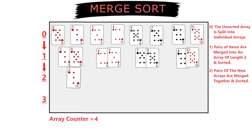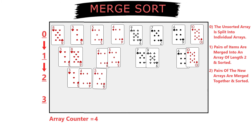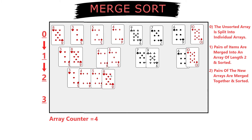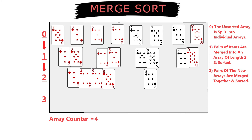In the second iteration, we do the same process by merging the array of length 2 into a new array of length 4. In this example, the 3 will be first, then the 4, the 5 and 8 last. We do the same with the second half of cards, and sort them into a new array of length 4.